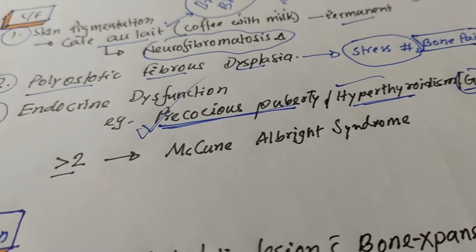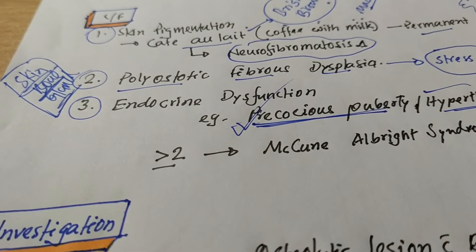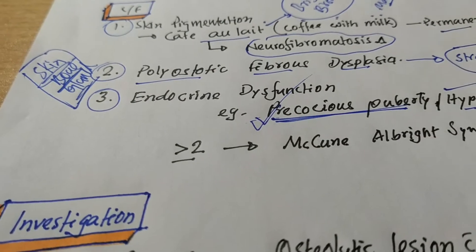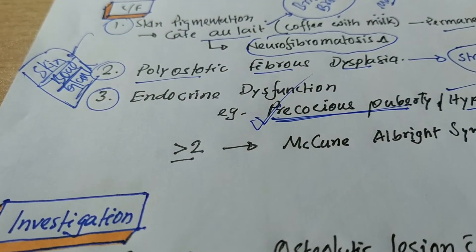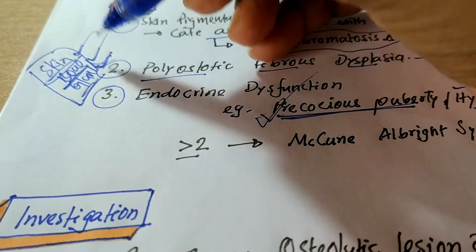Okay. So these are the clinical manifestations of McCune-Albright syndrome. But these three manifestations, look at here. Number one, the skin manifestation, number two, bone manifestation and number three, gland manifestation.